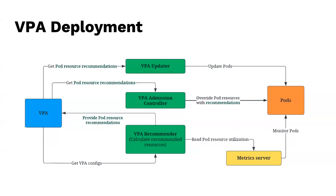The VPA recommender ties into the metrics server, looks at your memory consumption history, monitors the pods, makes a recommendation, and sends it to the VPA updater which applies it. You can override with different recommendation policies. You don't have to guess how much memory you need — if you start seeing heavy garbage collection pauses, the metrics server detects that and scales up memory resources automatically.